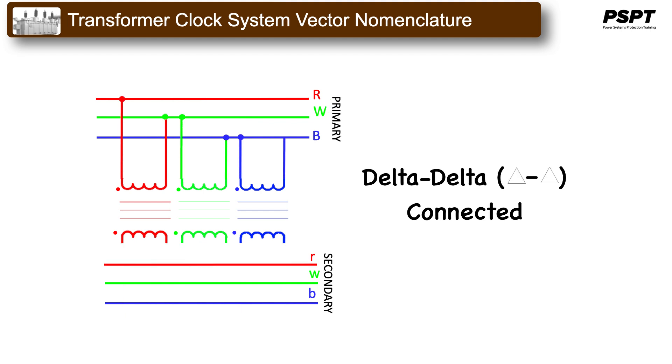As is the case for a delta-delta-connected transformer. Again, we have already looked at this connection, and it too seems fairly straightforward. However, if we reverse the connections of each of the secondary windings, it would still be delta-delta-connected, but certainly the secondary phasors would have to be different.